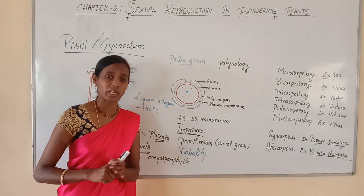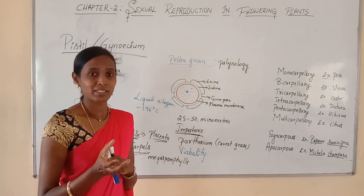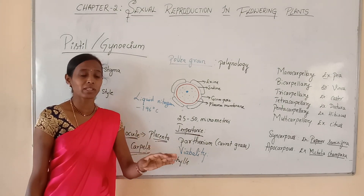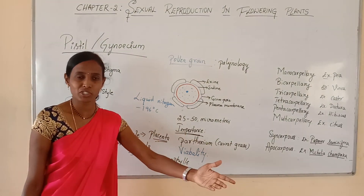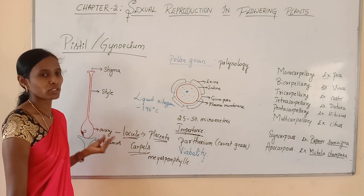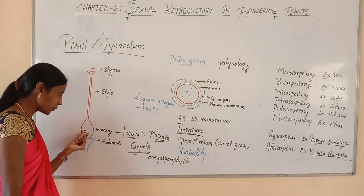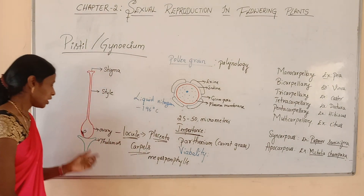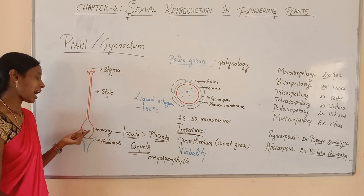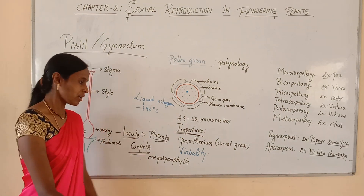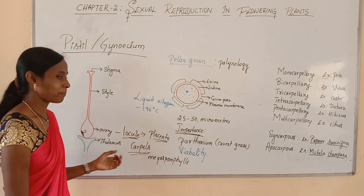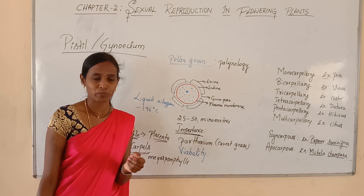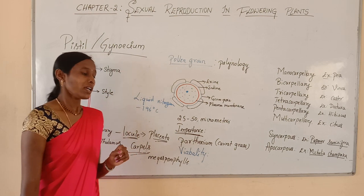The ovule after fertilization develops into a seed, and the ovary develops into a fruit. The number of seeds equals the number of ovules. For example, in paddy and wheat, a single ovary comprises a single ovule. Similarly, mango has a single ovary with a single ovule.